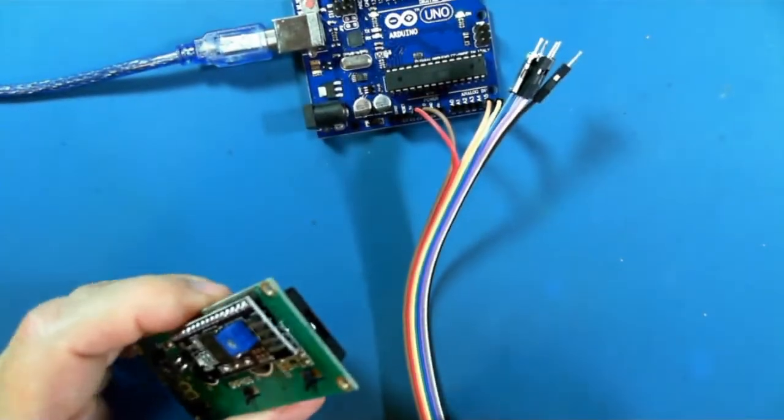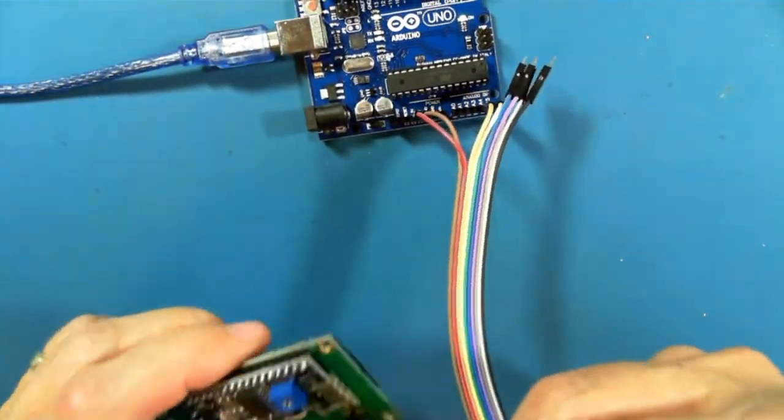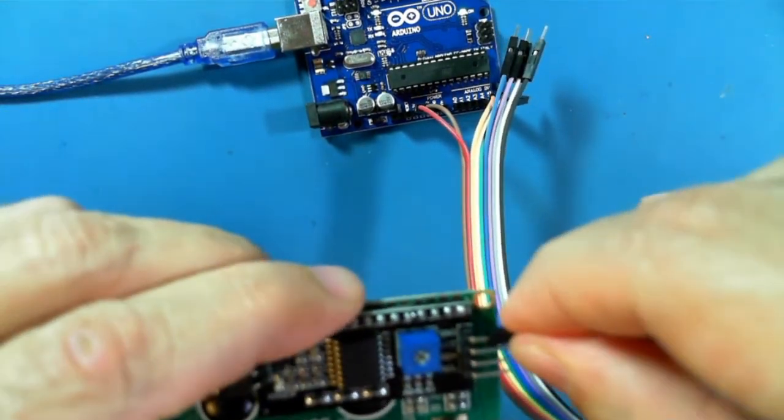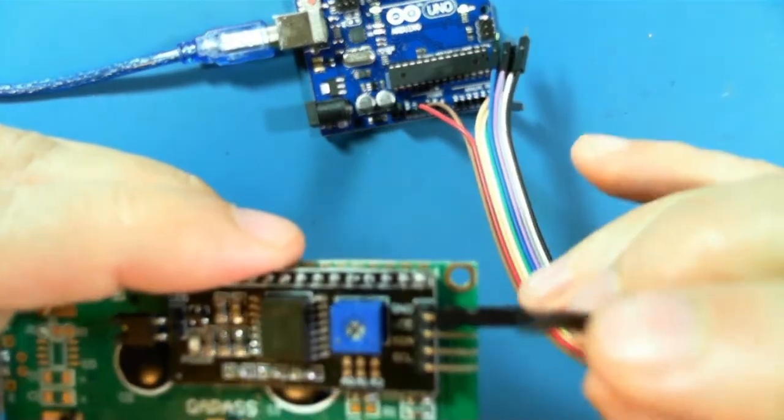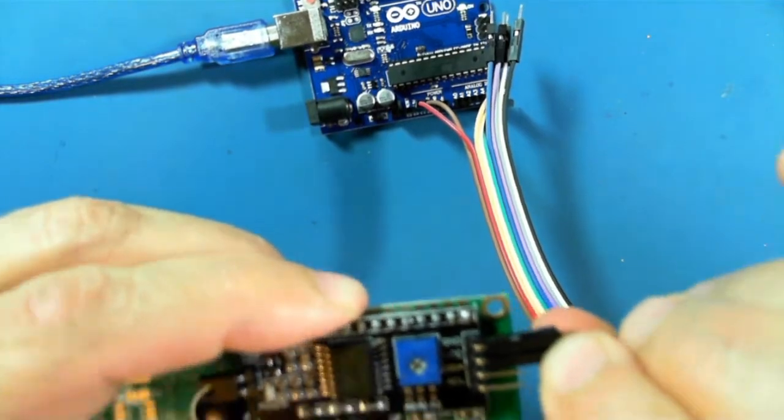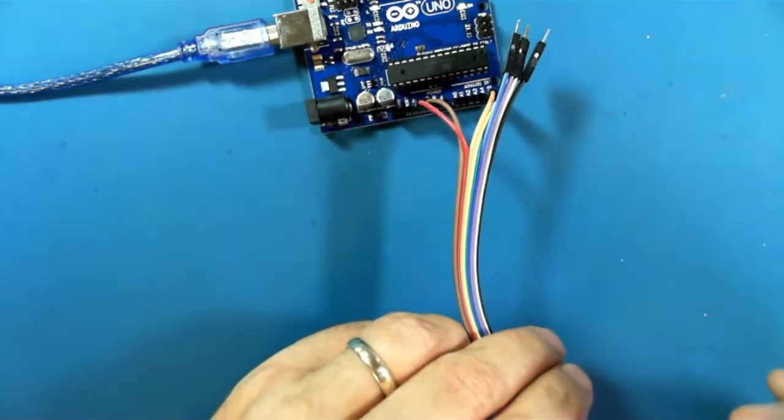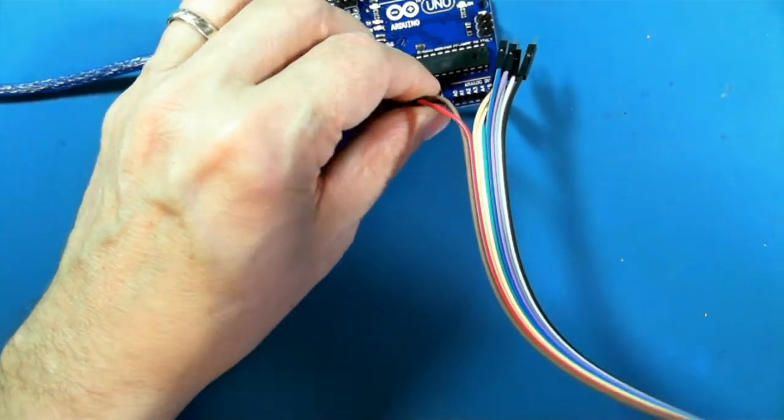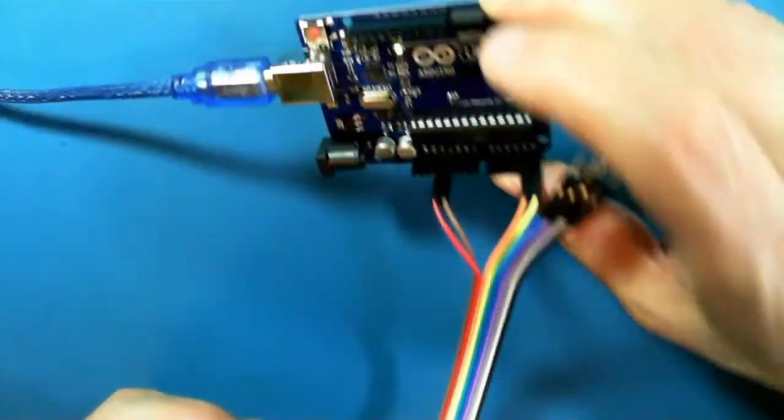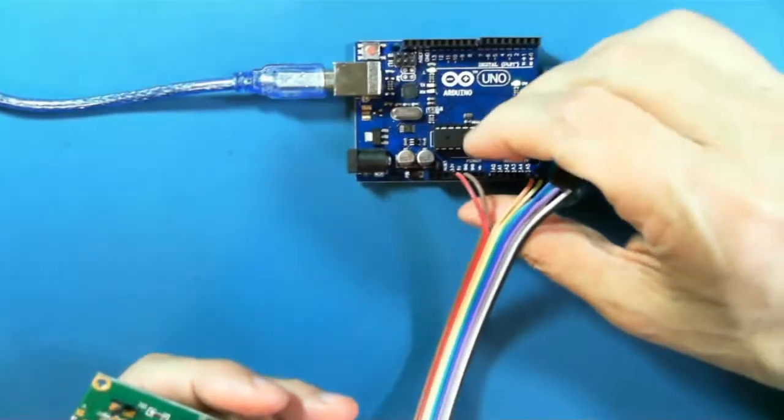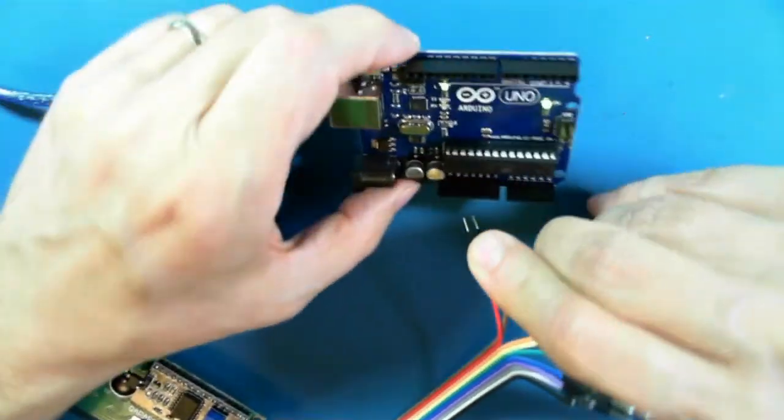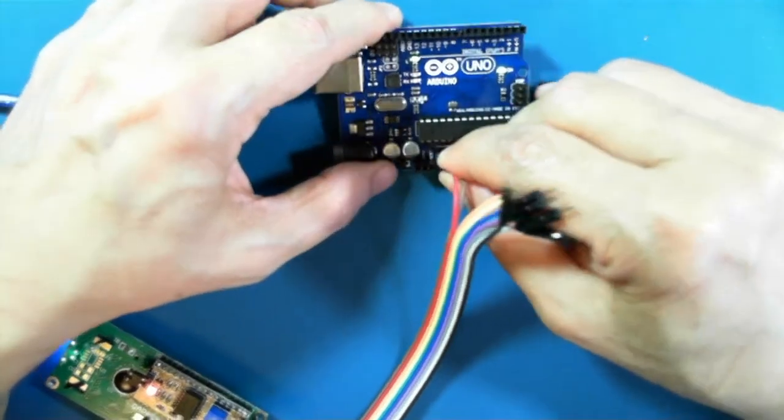Okay, so we've got ground is brown, VCC is red. Is that right? Hopefully. We don't want to, oops no that's not correct. We have the wrong two pins. There we go.